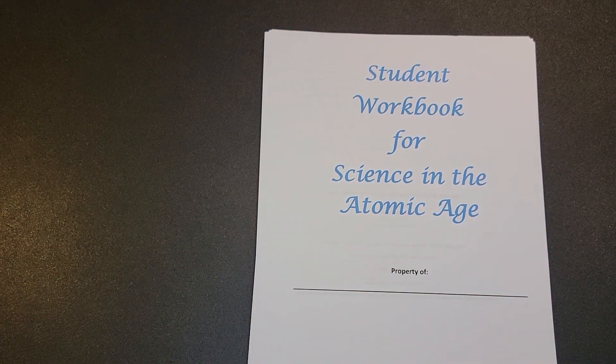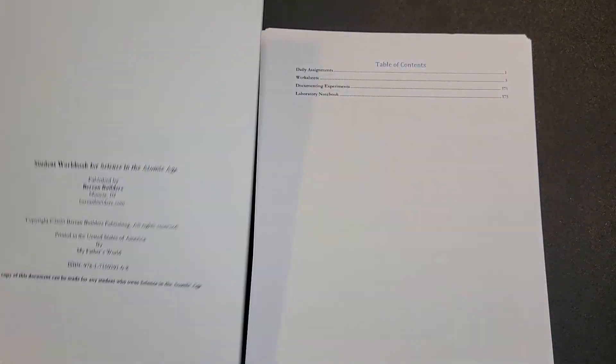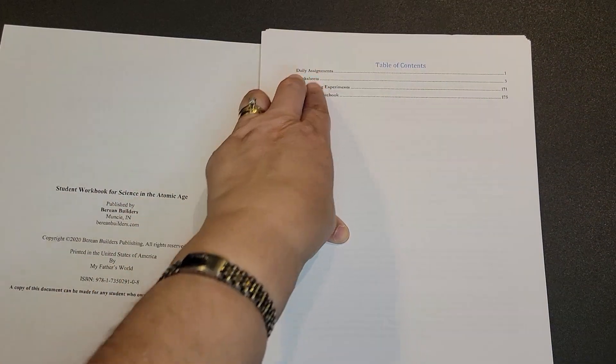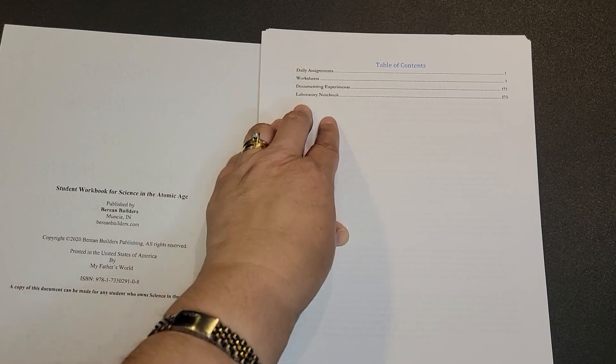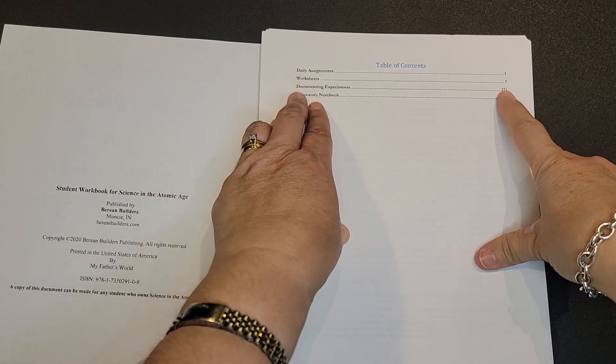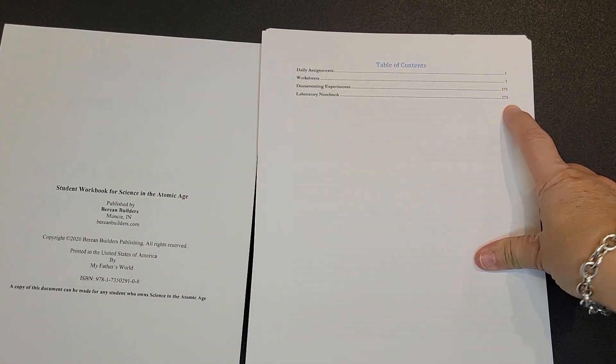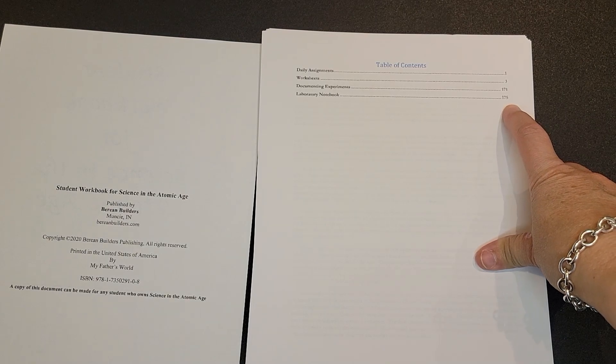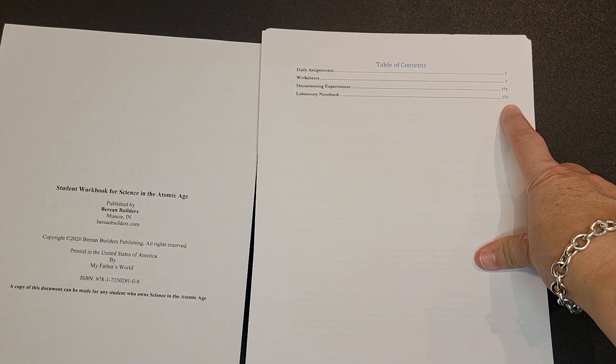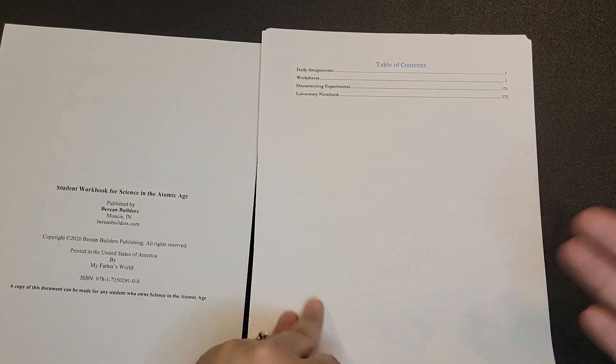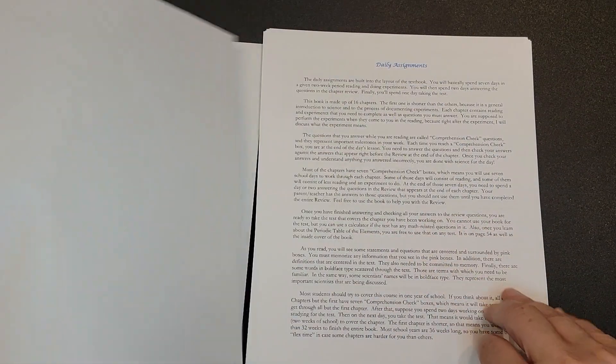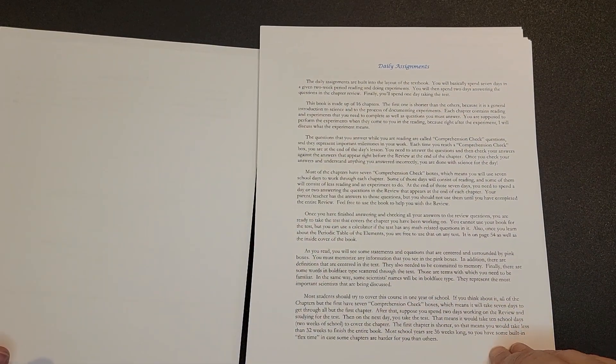What the workbook consists of are daily assignments, worksheets, documenting your experiments. This is an explanation of it, and then your laboratory notebook. So I think that you go up into the page 300s or something with just those blank pages for your laboratory notebook.